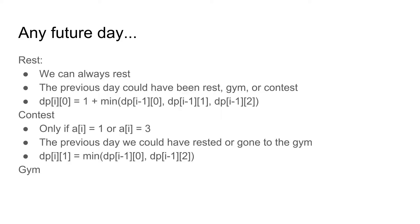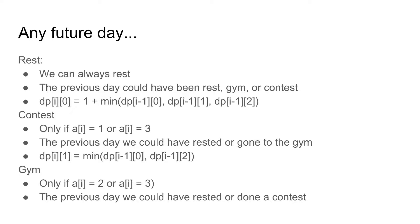The last option is going to the gym, which is similar to doing a contest. We can only go to the gym if a[i] equals 2 or a[i] equals 3. If we go to the gym, the previous day could have been rest or contest. So dp[i][2] = min(dp[i-1][0], dp[i-1][1]). We do not include dp[i-1][2] because we cannot go to the gym on two consecutive days.